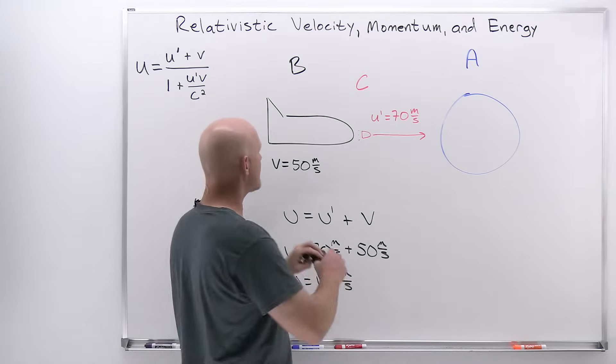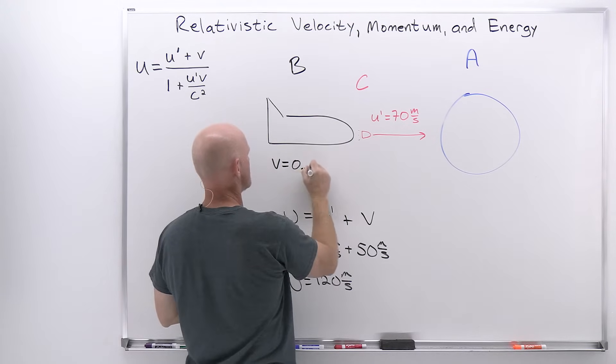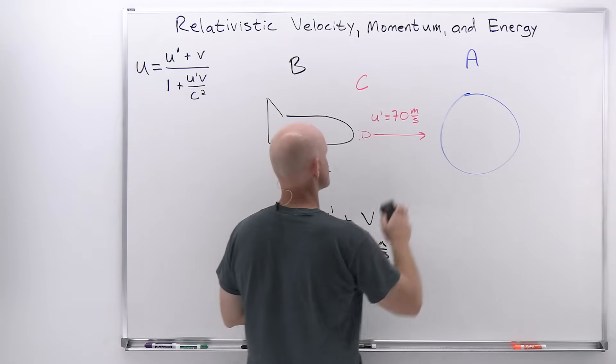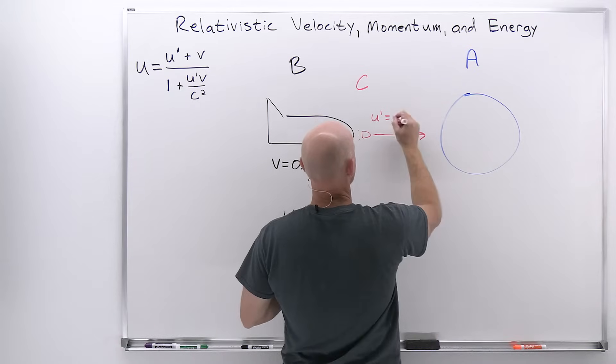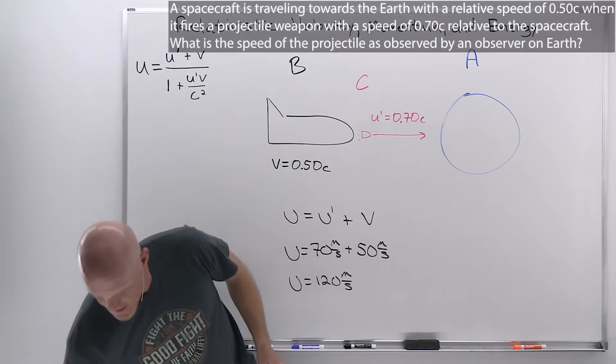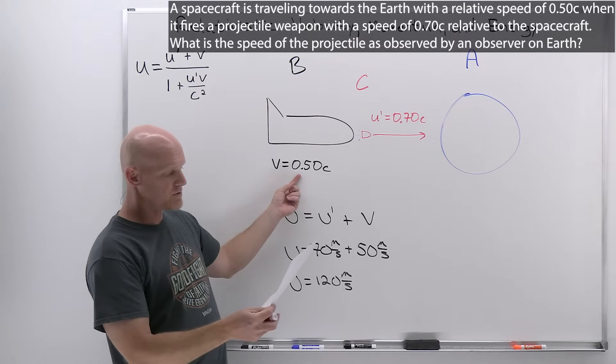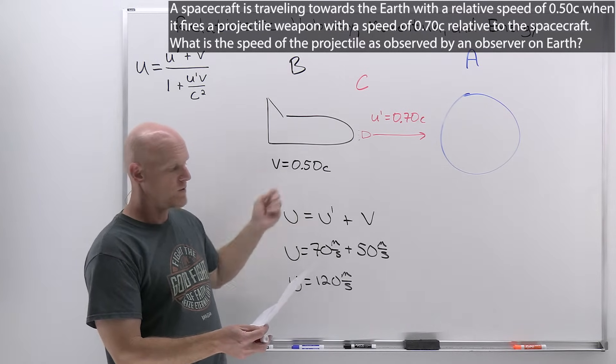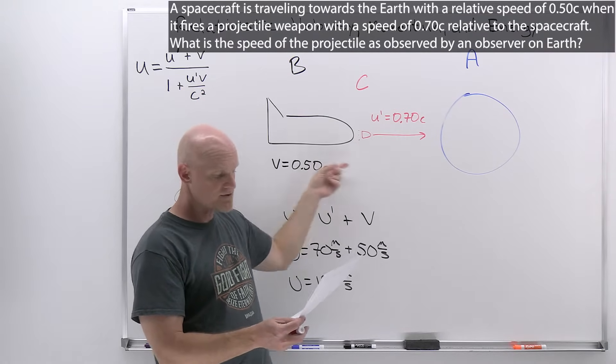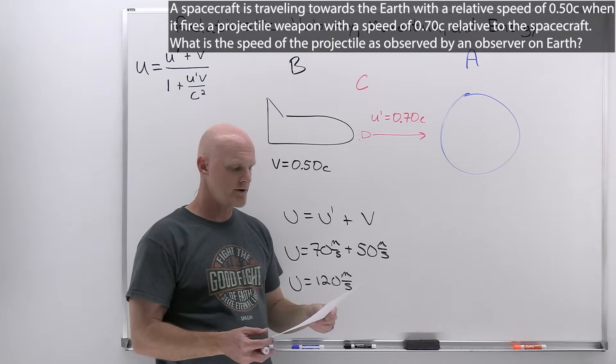Let's say these velocities are a little faster now. Instead of 50 meters per second, we're going to make this 0.50 times the speed of light. And instead of this one being 70 meters per second, we're going to make that 0.70 times the speed of light. The question on our handout here says, a spacecraft is traveling towards the earth with a relative speed of 0.50 c when it fires a projectile weapon with a speed of 0.70 c relative to the spacecraft. What is the speed of the projectile as observed by an observer on earth?